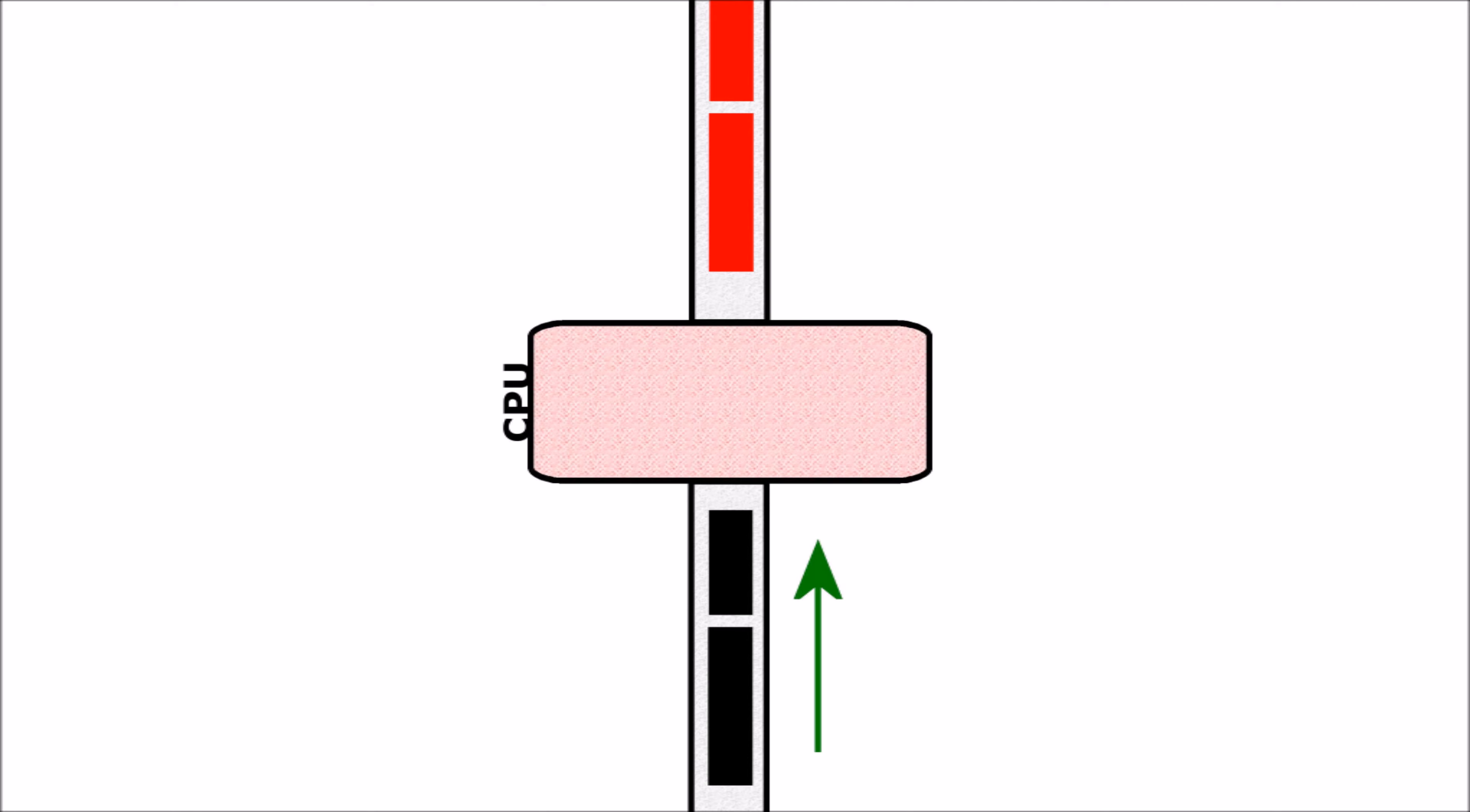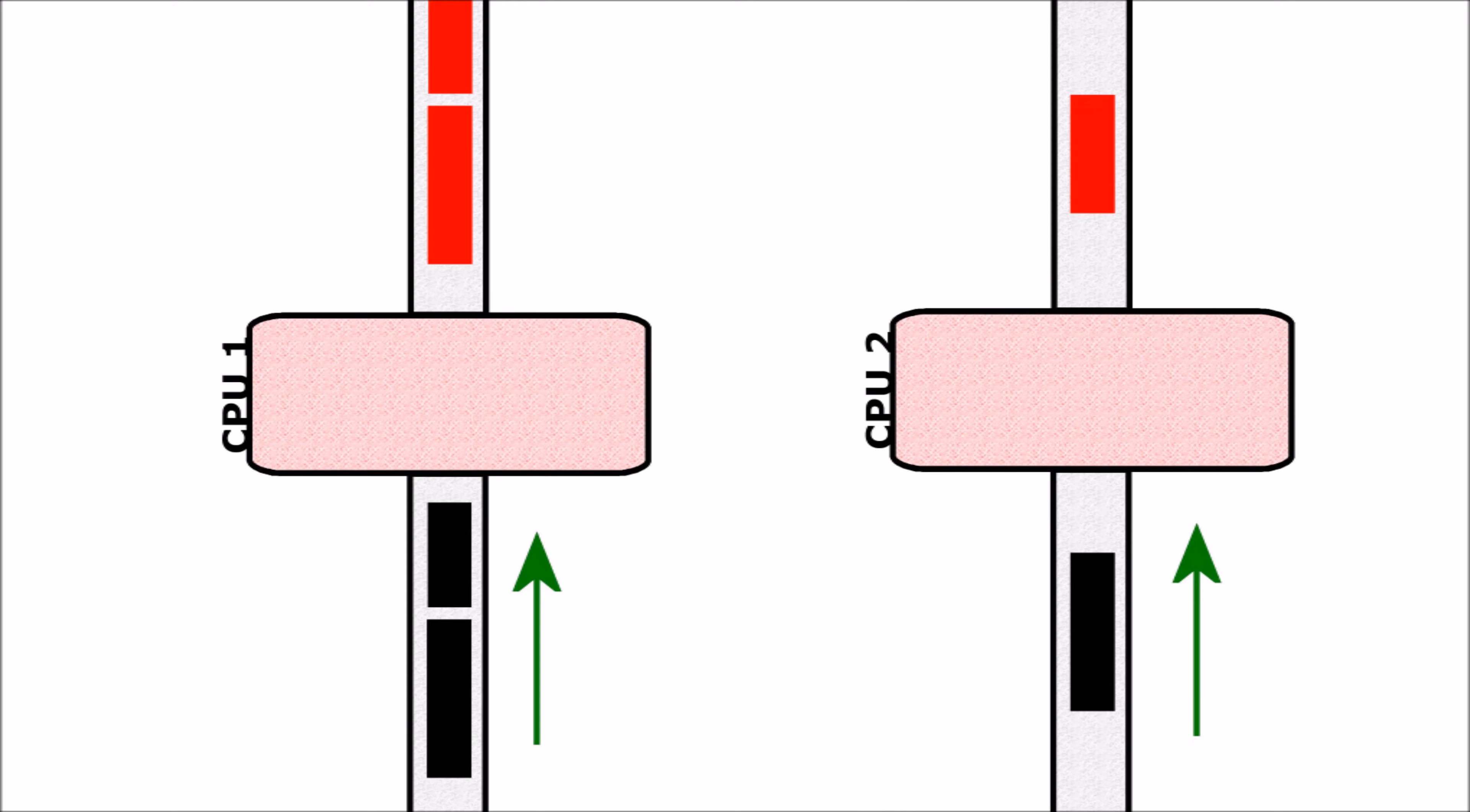This changed when we went into multiple cores. Each core had its own road, which meant instead of being able to just deal with one car at a time, we could technically deal with multiple cars, each with their own CPU.